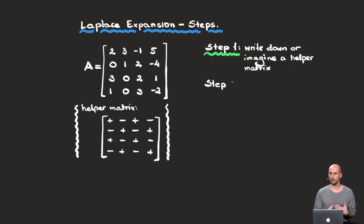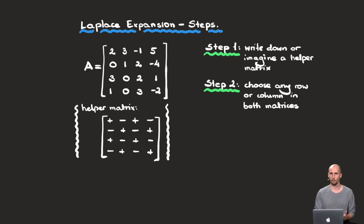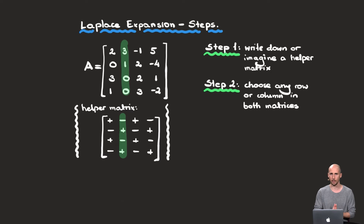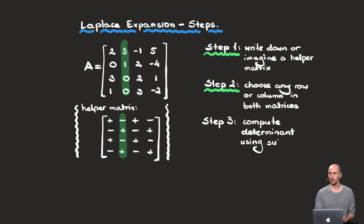The next step is simply choosing any row or any column in both matrices. For instance, I have chosen the second column of matrix A, which I also highlighted in the helper matrix. In theory you can choose any row or column — it doesn't matter which one you choose, you will get the same result.